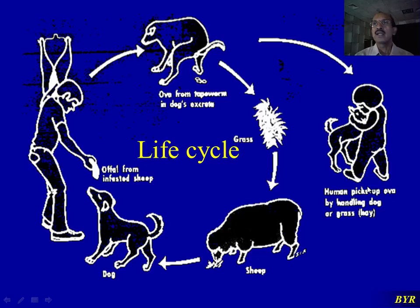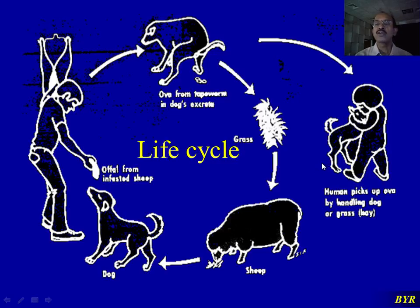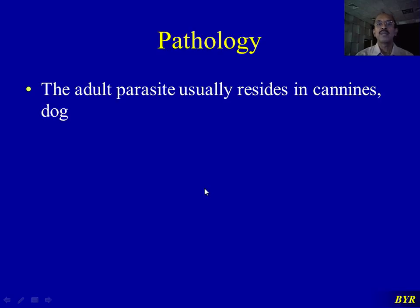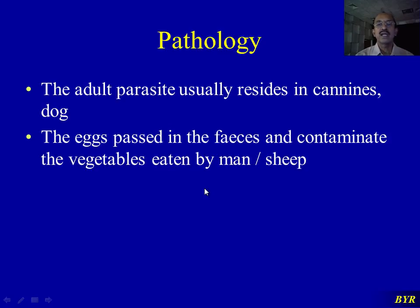For the parasite, a human being hosting it in the larval form is an unwanted situation, because the parasite cannot grow into an adult — human flesh cannot be eaten by a dog. The adult parasite normally resides in canines; eggs pass in the feces and contaminate vegetables eaten by man or sheep.